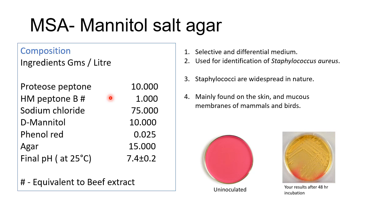MSA is used for isolating coagulase-positive staphylococci from cosmetics, food, milk, and other specimens. HM peptone B (beef extract) and proteose peptone supply essential growth factors and trace nutrients. Sodium chloride serves as an inhibitory agent for other bacteria. Mannitol is the fermentable carbohydrate; its fermentation leads to acid production detected by phenol red. S. aureus ferments mannitol and produces yellow colonies surrounded by a yellow zone, while coagulase-negative strains produce pink to red colonies with red-purple zones.